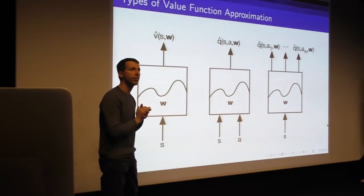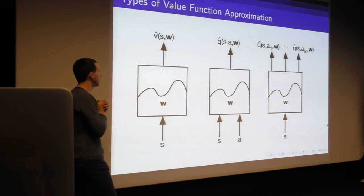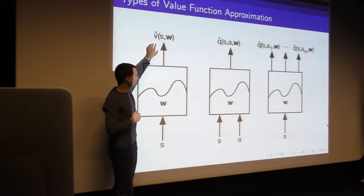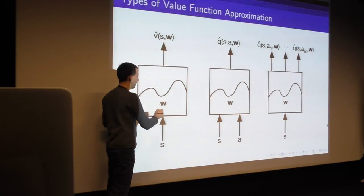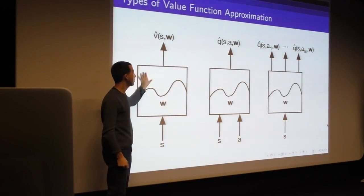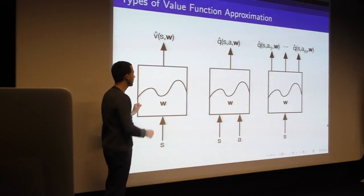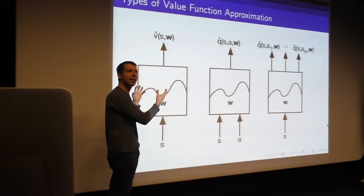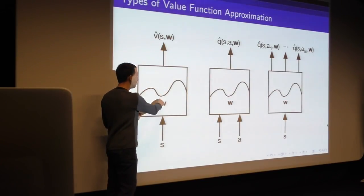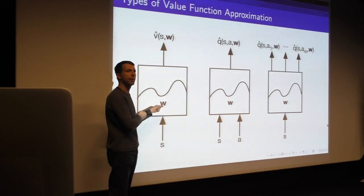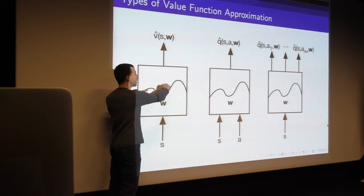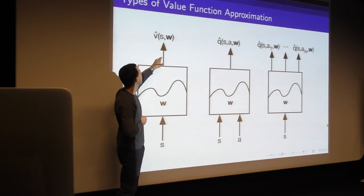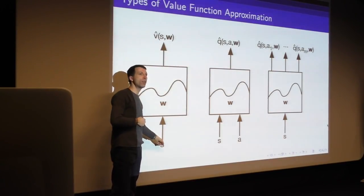There are three types of value function approximation architectures. For state value function approximation, you feed in your state to a black box — like a neural network with internal parameter vector w — and it outputs the estimated value V-hat of s. For action value function approximation, there's an 'action in' form where you feed in s and a to get Q-hat of s, a; and an 'action out' form where you feed in only s and get values for all actions simultaneously.